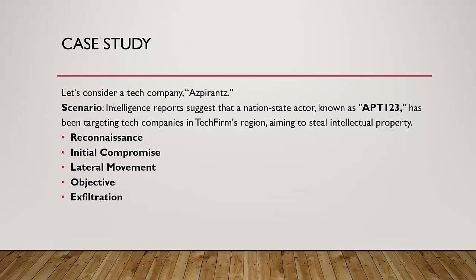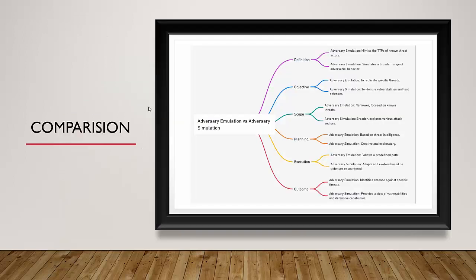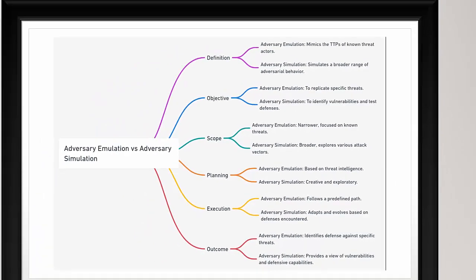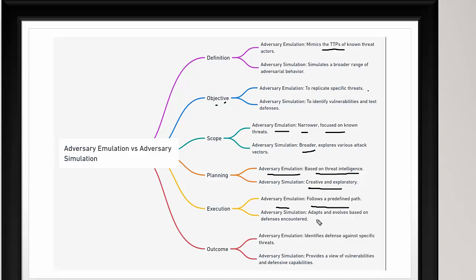Many people get confused by the thin line difference between the two. In emulation, we mimic the TTPs of known threat actors with no modification; in simulation, we simulate a broader range with more modification. The objective of emulation is to replicate a specific threat; simulation aims to identify vulnerabilities and test defenses. Emulation has a narrow scope focused on known threats; simulation has a broader scope with more customization options. In planning, emulation is based on threat intel; simulation is creative and exploratory — more like an advanced version of pen testing. Emulation follows a predefined path and outcome targets defense against a specific threat; simulation provides a broader view of vulnerabilities and defensive capabilities.